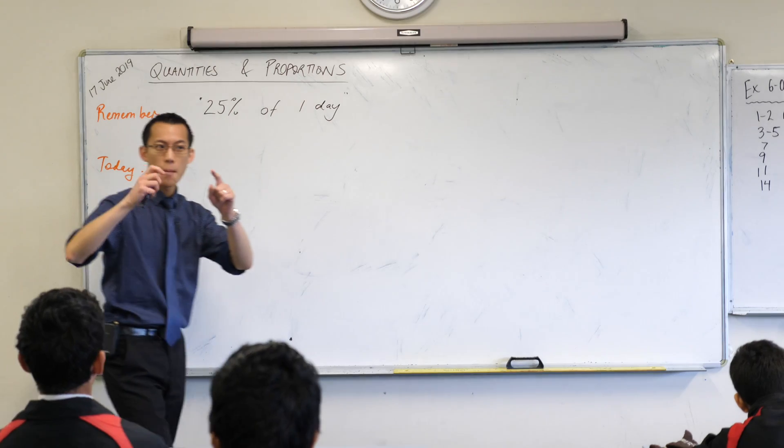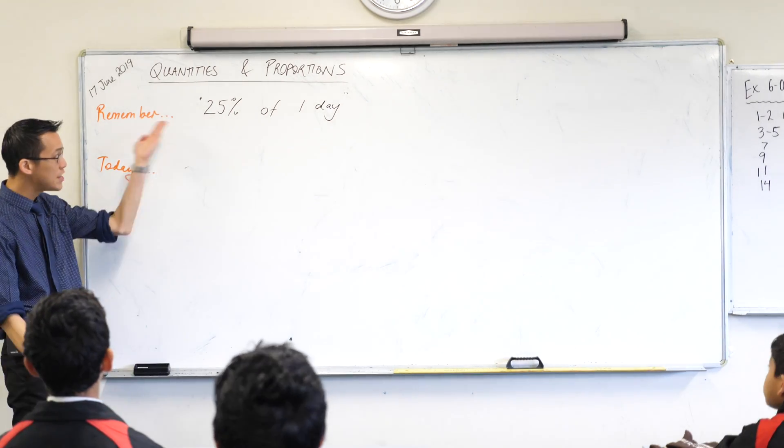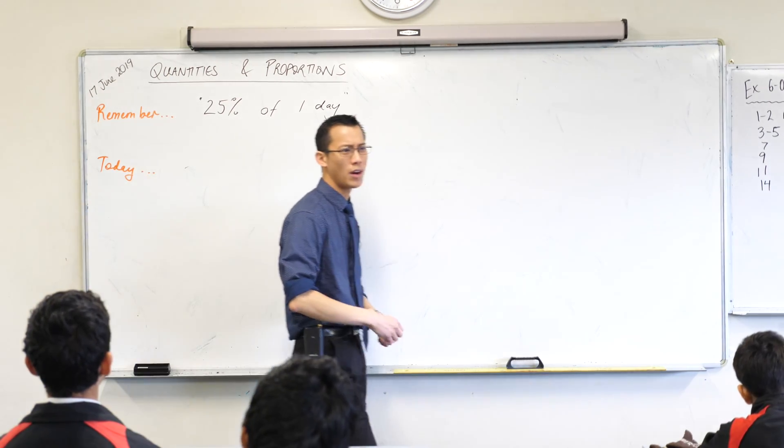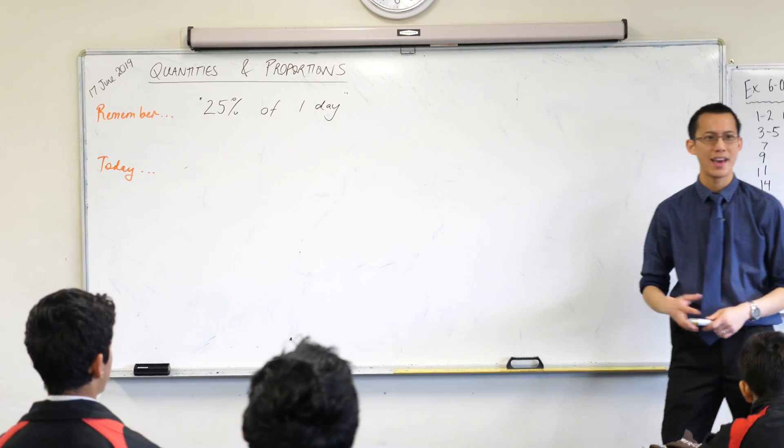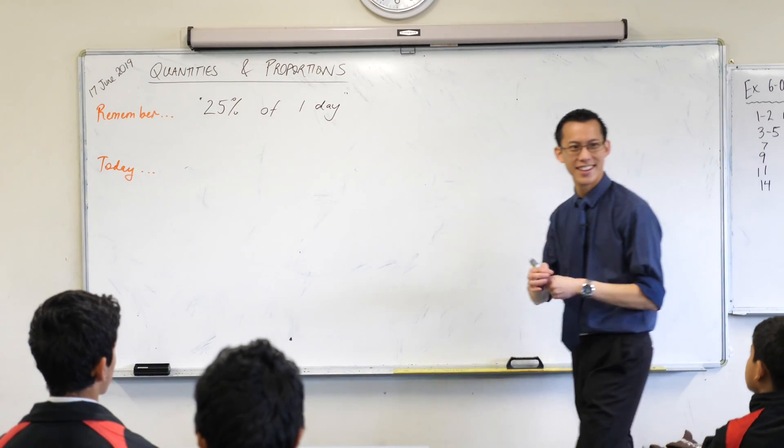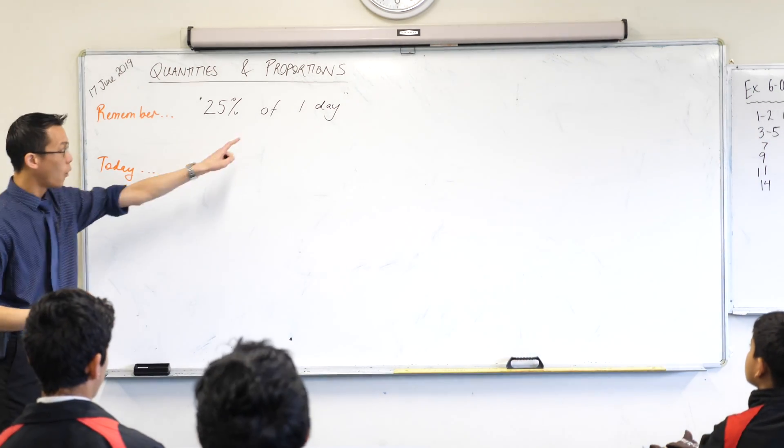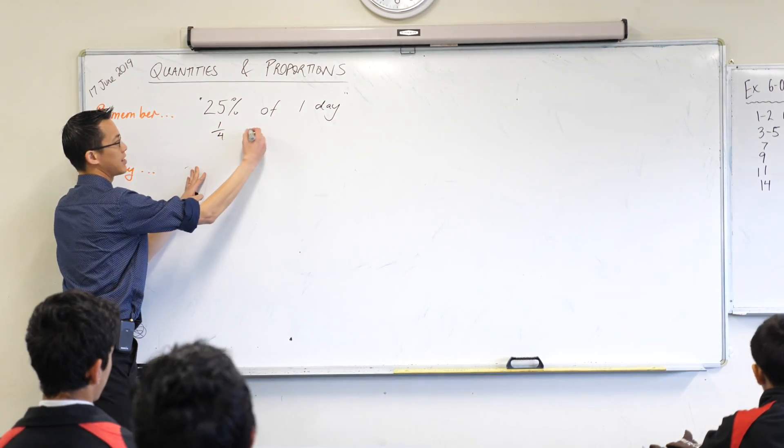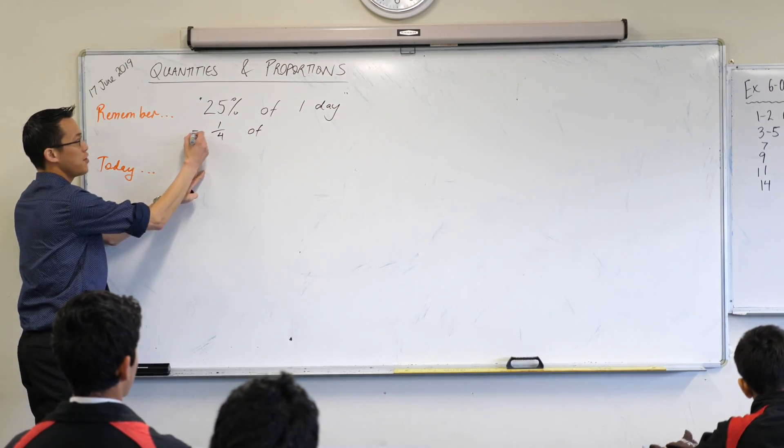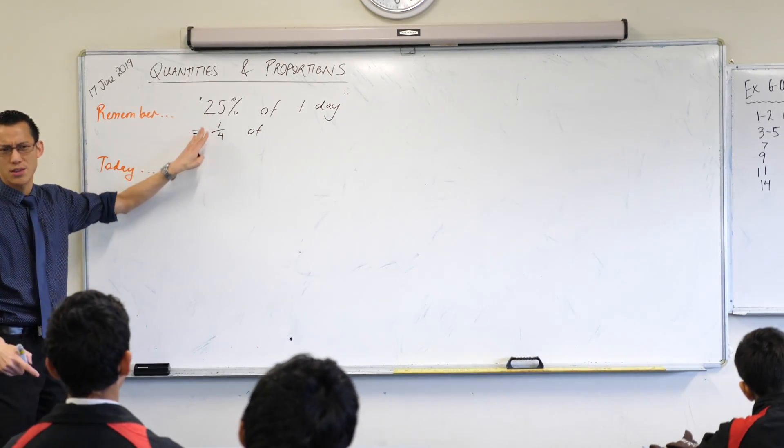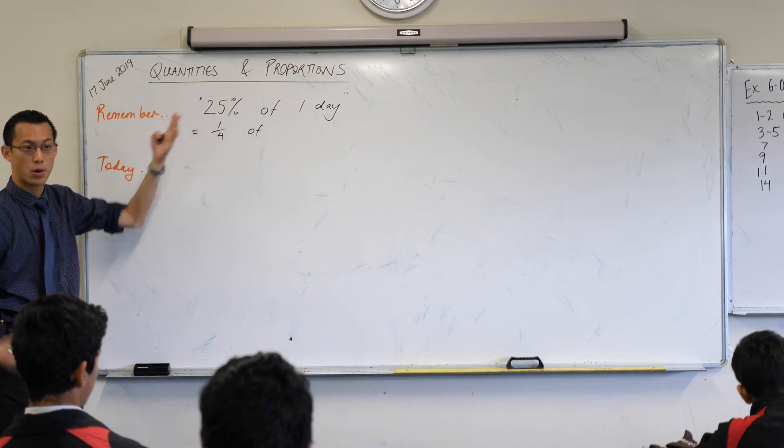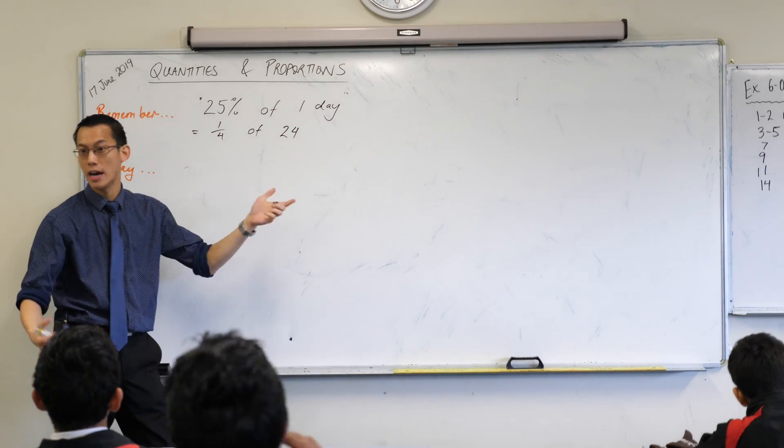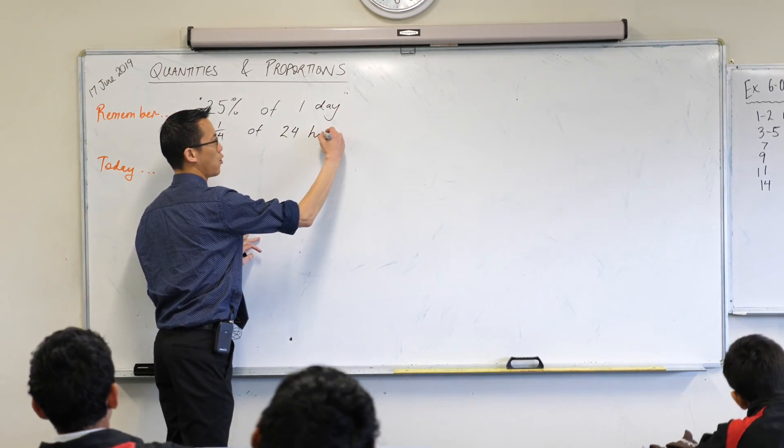And so we looked at proportions of quantities last time. This is a proportion of a quantity, 25% of one day. What length of time would that be, 25% of one day? Yeah, Jessica? One day is roughly 24 hours. One day is roughly 24 hours. Okay, so you've done, and maybe you've been thinking similarly in your brain, right? You've done a bit of a conversion here, right?